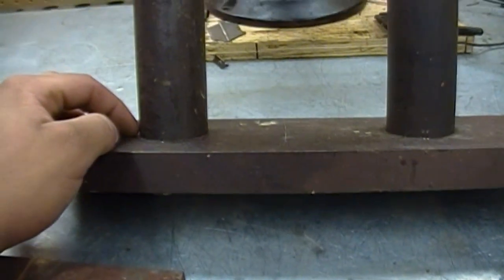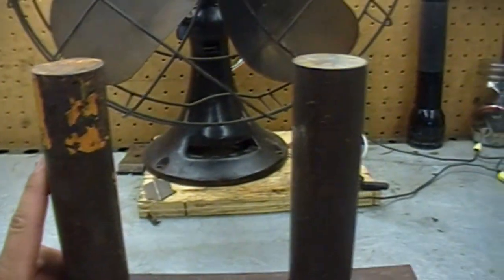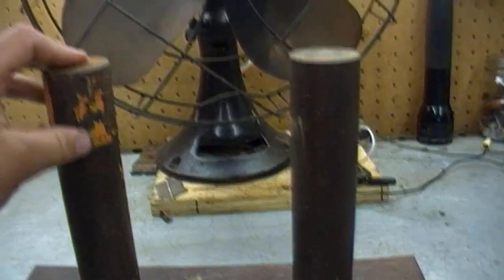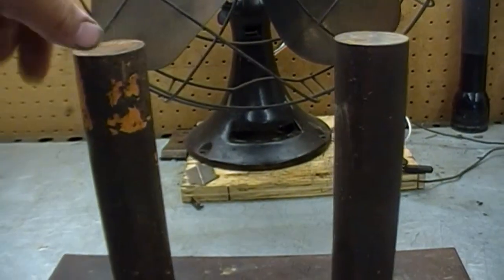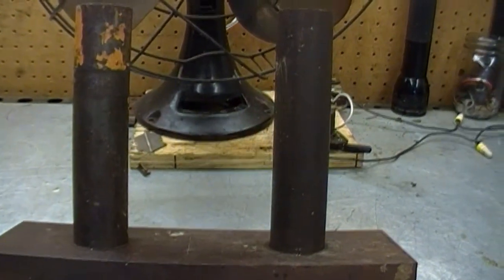I was thinking about welding it, but I want to be able to remove these cores. It'll make it a lot easier when I go to wrap the coil.